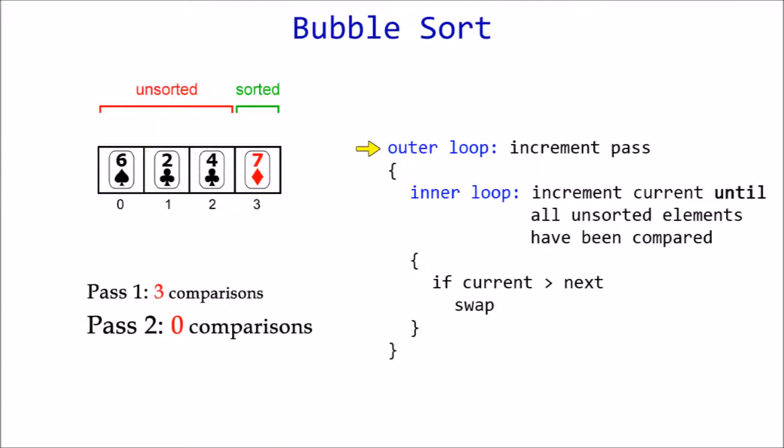Now for the second pass. As stated before, current starts at index zero and is compared against the next element. Six is greater than two, so they are swapped, and current is incremented to index one.